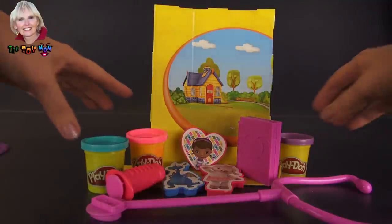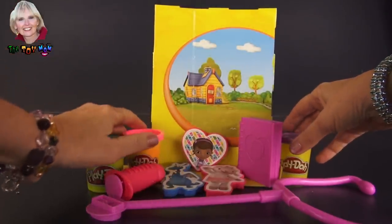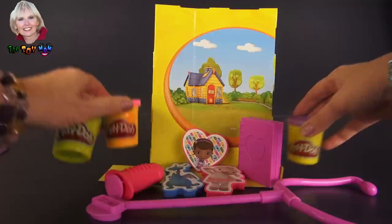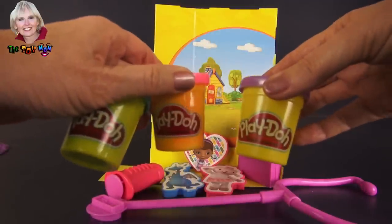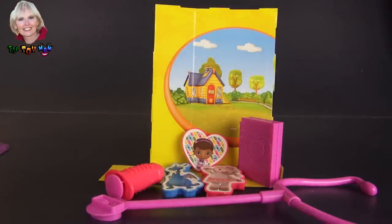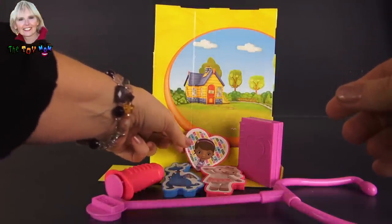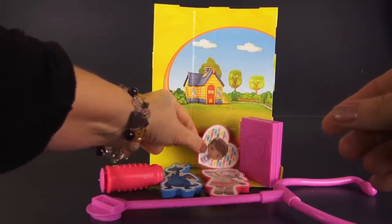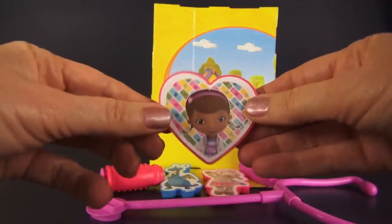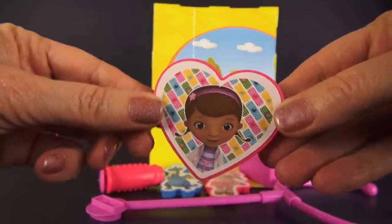This is a Play-Doh set, so of course it comes with Play-Doh. It has three different colors that we're going to be using, and then we have the character, of course, of Doc McStuffins in the form of a heart. Very cute. Hi, Doc.